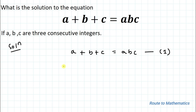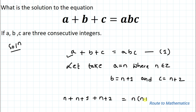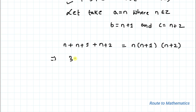Since a, b, c are three consecutive integers, let's take a equals n, where n is an integer. Then b equals n plus 1, and c equals n plus 2. Substituting into equation 1 gives: n plus (n+1) plus (n+2) equals n·(n+1)·(n+2), which simplifies to 3n plus 3 equals n·(n+1)·(n+2).